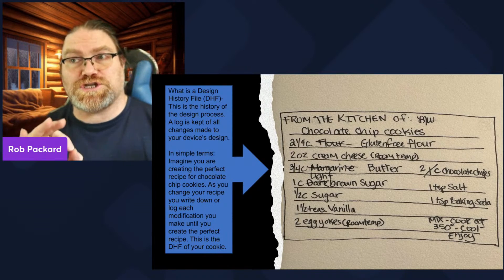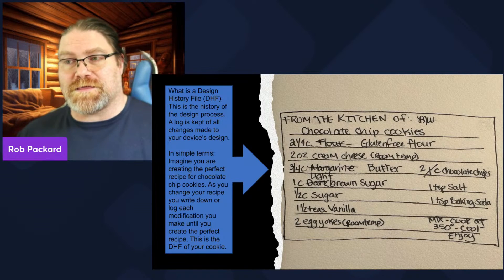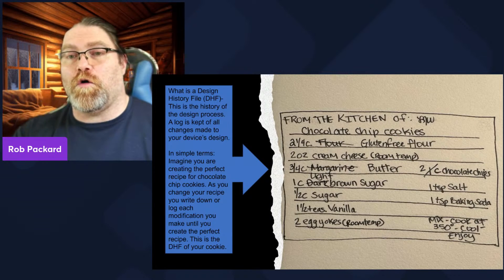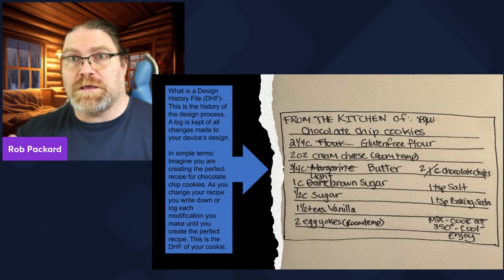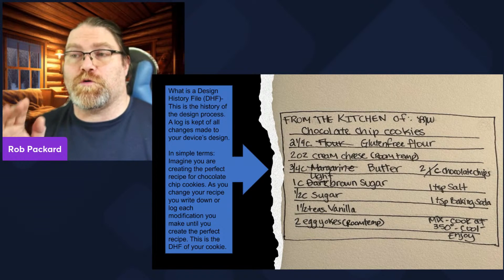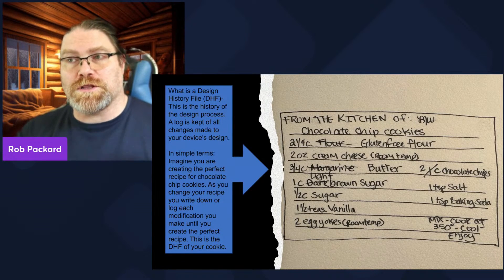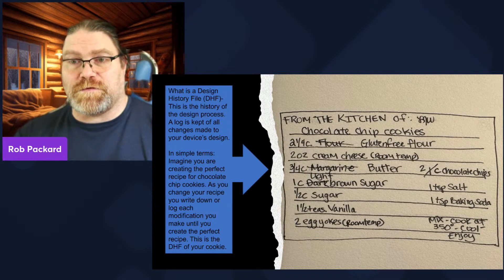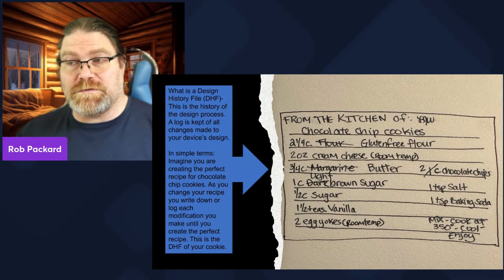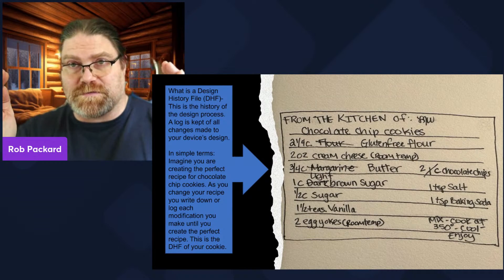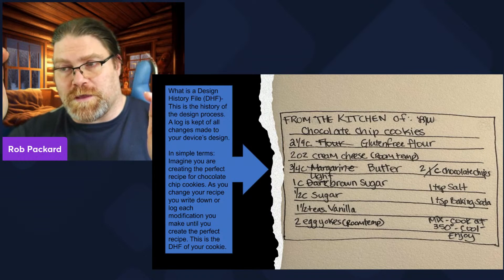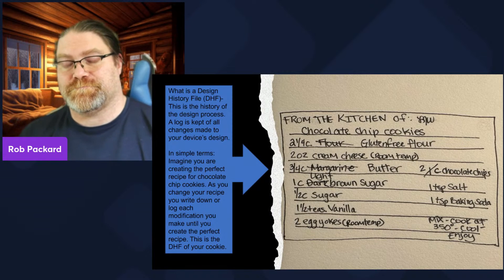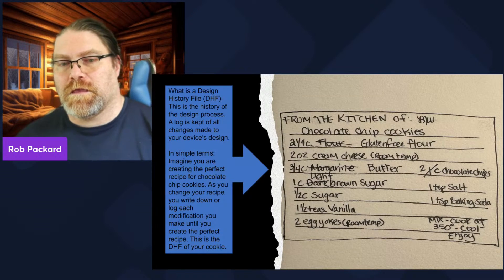The DHF is the history of all the things you've done from the beginning of time until you launch the product. We don't keep the design history file open after we release the product. Once you have a 510k, we close the design history file. Why? Because only the FDA cares about the design history file — everybody else just wants records of design. The FDA calls it the design history file from beginning to end, and they want it closed when you have a 510k. If you make changes after that, that's a new design history file.